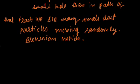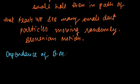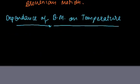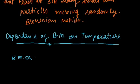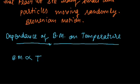Now, the dependence of Brownian motion on temperature: Brownian motion is directly proportional to temperature. If temperature increases, Brownian motion also increases. For example, when your mom cooks food, you can smell it from another room because the high temperature increases the movement of particles. When the food becomes cold, the temperature decreases and you can no longer smell it from another room — you have to go to the kitchen. So Brownian motion is dependent on temperature.